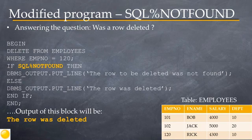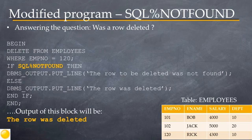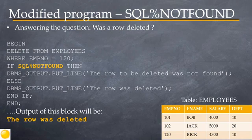Notice the use of SQL%NOTFOUND in the conditional IF statement immediately following the DELETE. If the row where employee number is 120 was not found in the table, then SQL%NOTFOUND would become true and the string 'The row to be deleted was not found' would be displayed. If employee 120 was in the table, SQL%NOTFOUND becomes false and the ELSE part executes, returning the string 'The row was deleted.' Looking at the employees table on this slide, row 120 does exist.